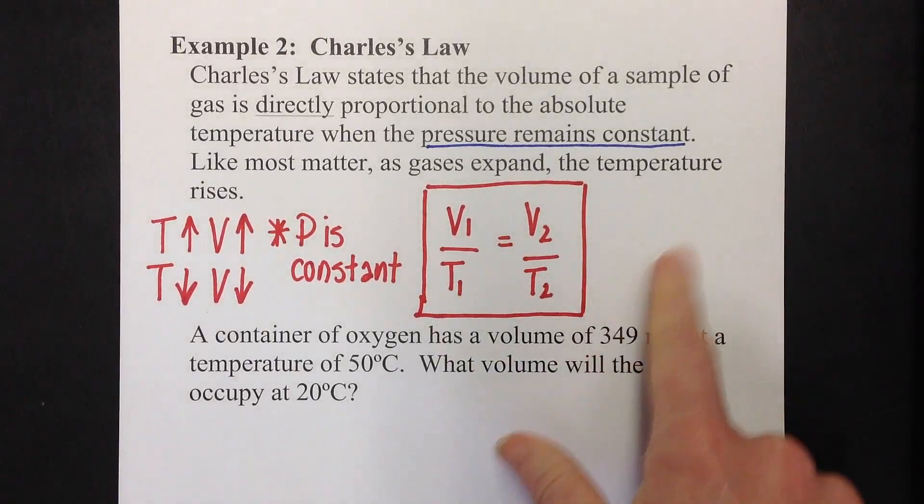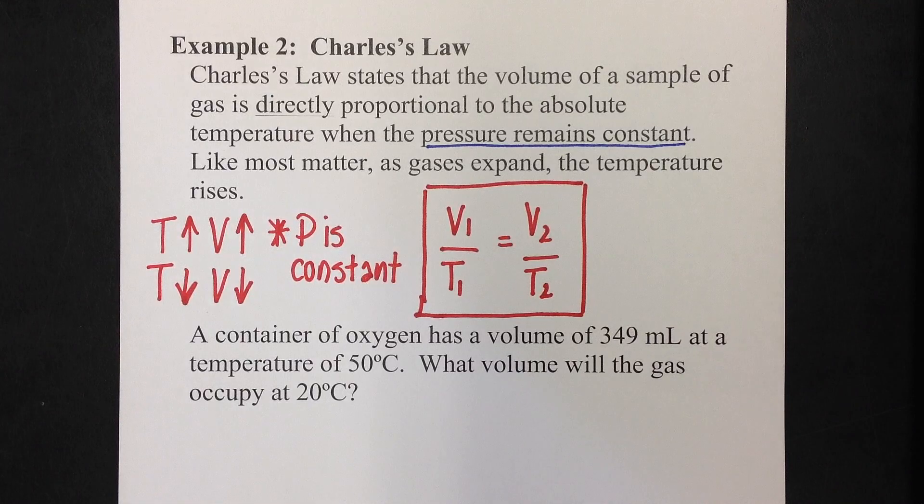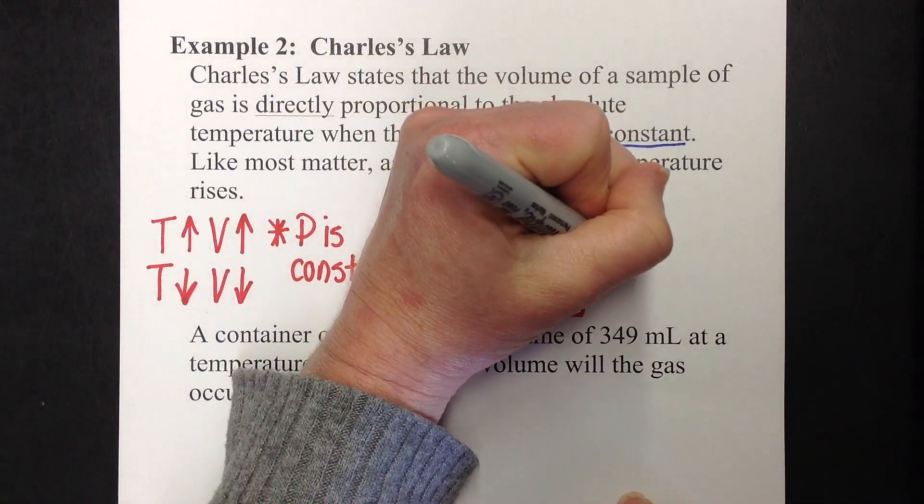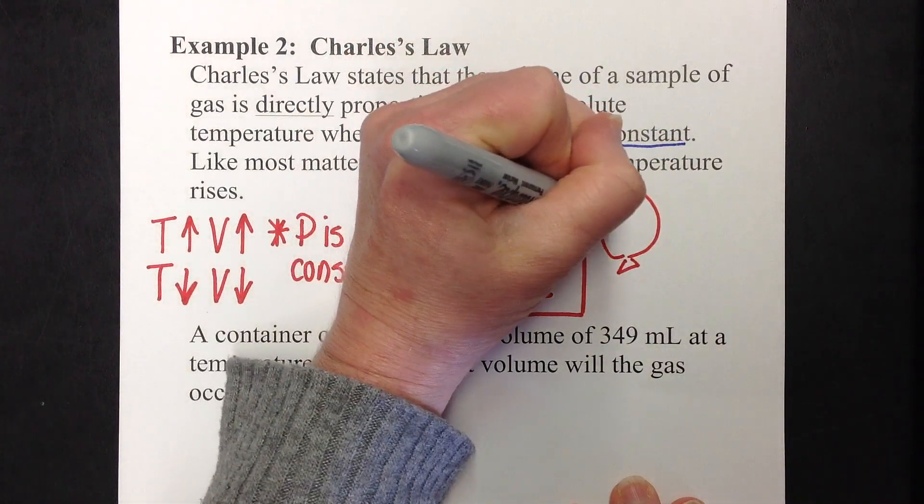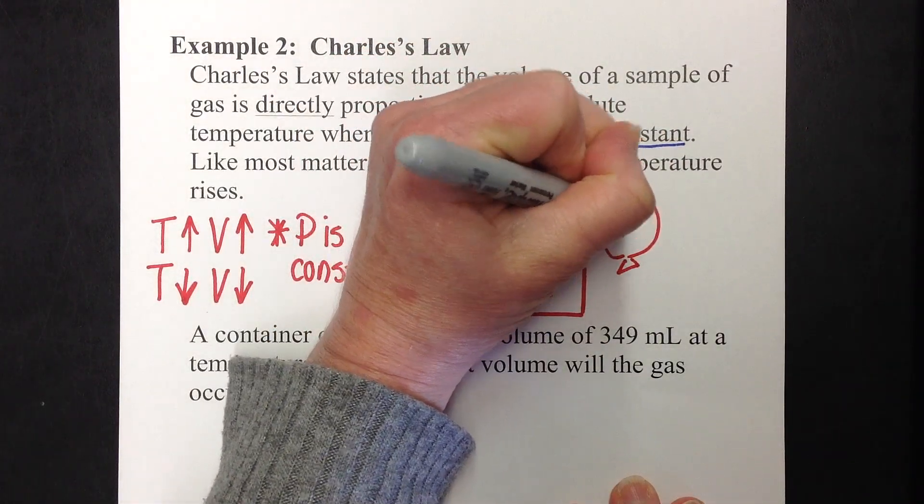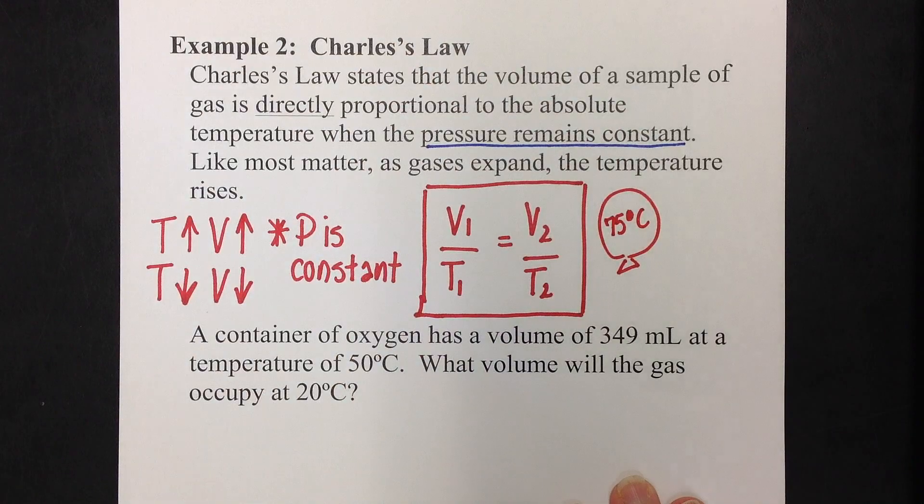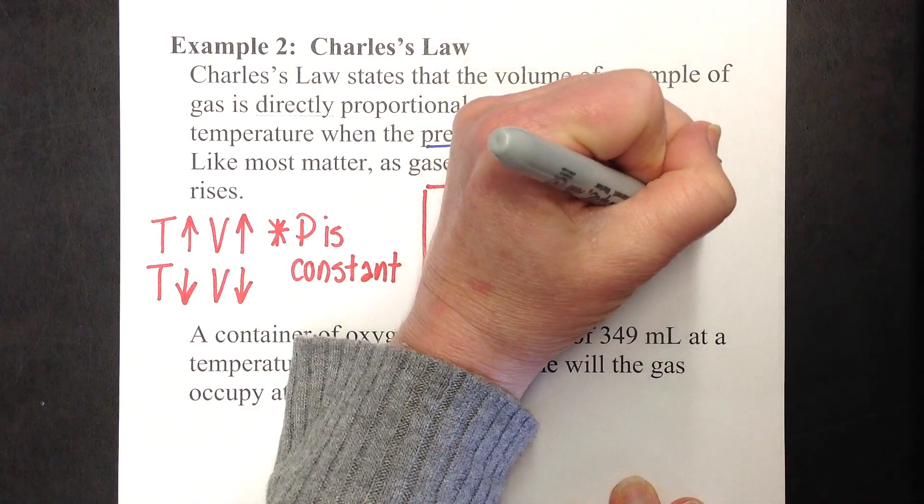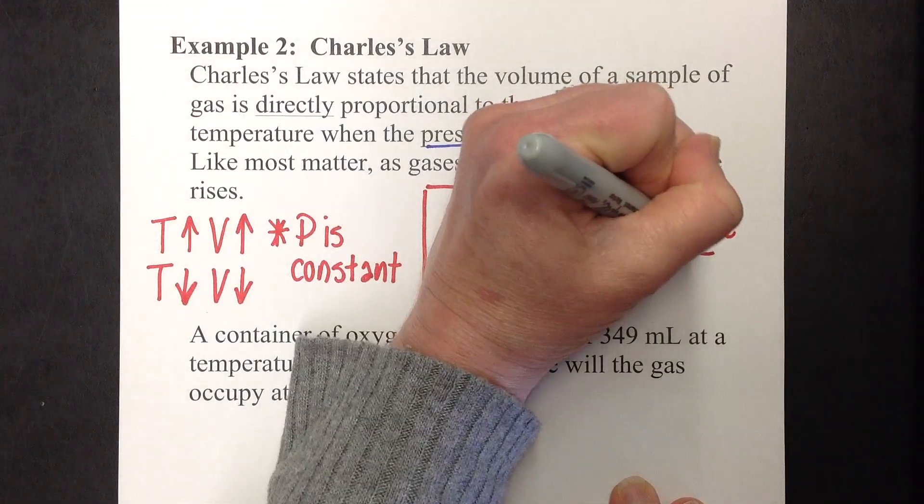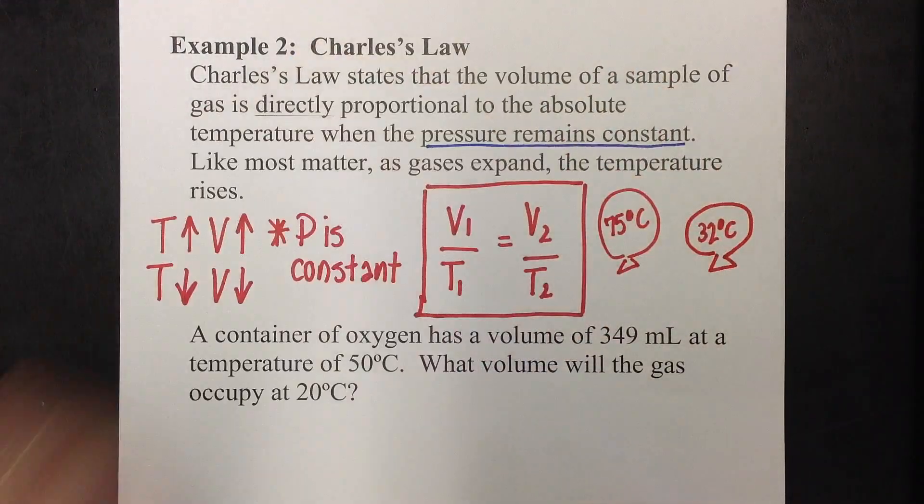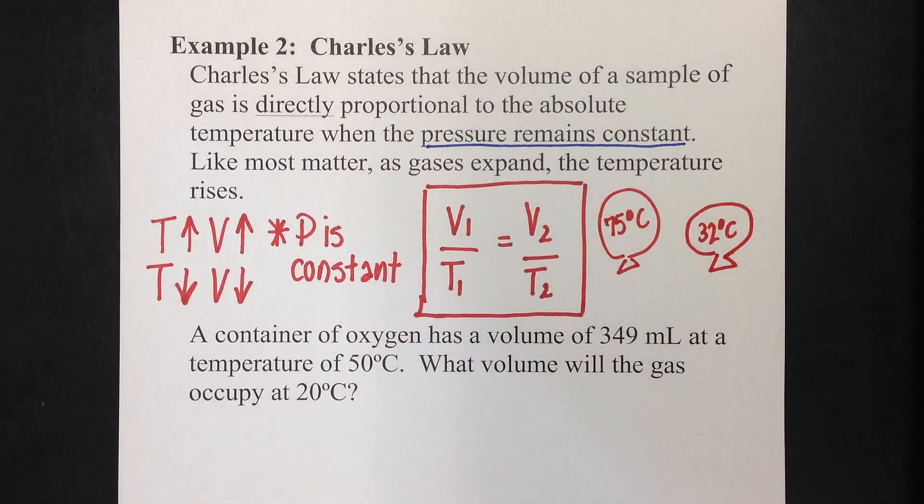And again, you may want to make a note over here if you're taking notes at home. A great example could be a balloon. And we'll just draw one of those real quick. Let's say you have a balloon and it's at 75 Celsius. And let's say the temperature of that balloon drops to maybe 32 degrees Celsius. We would expect the volume of the balloon to be a lot smaller. So, temperature up, volume up, temperature down, volume down.